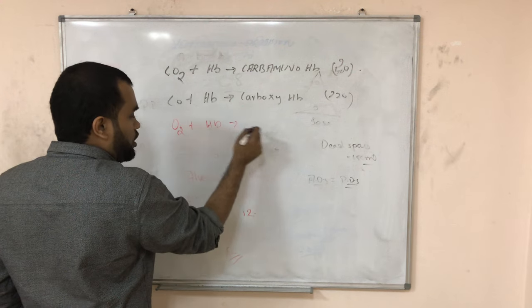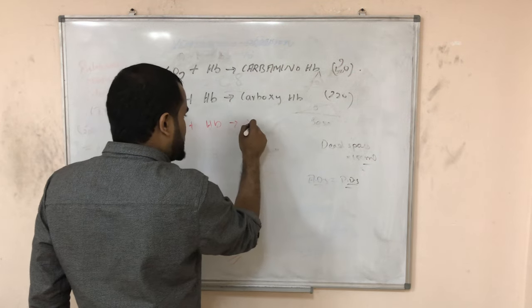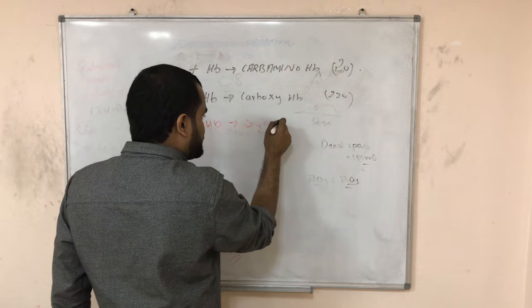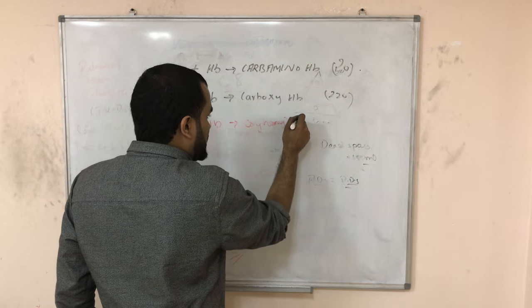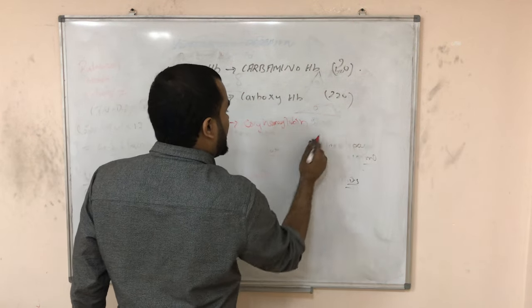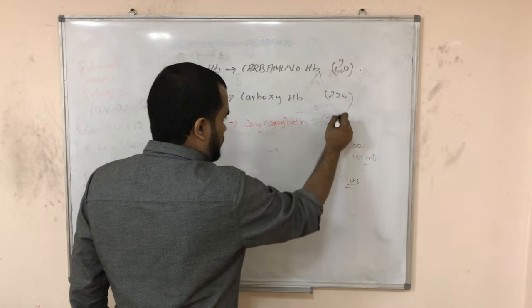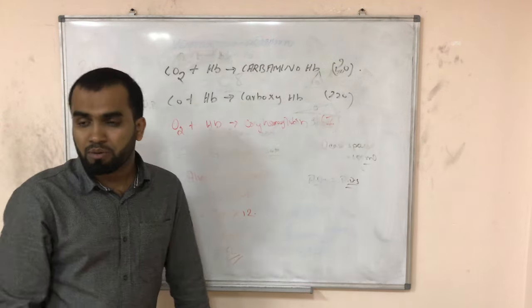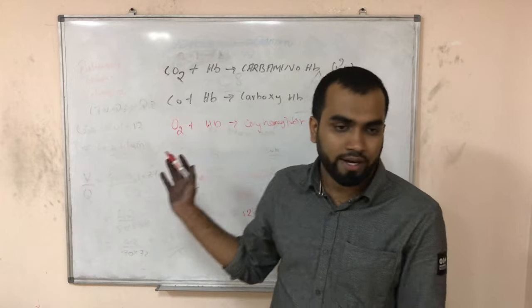Now last one, everyone knows - oxygen combined with hemoglobin forms oxyhemoglobin. That is only one. Affinity is very low. So remember, if carbon monoxide enters here, they will replace oxygen.